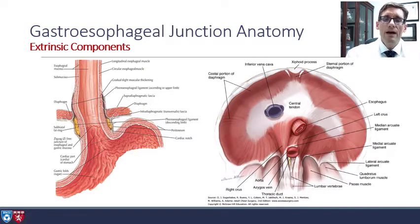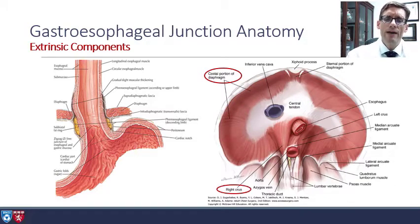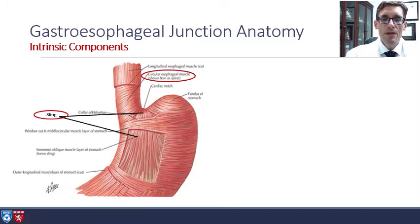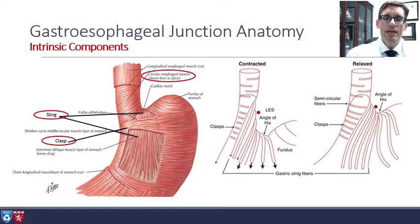Here we have the extrinsic components of the gastroesophageal junction, and these are very important. We have the costal portions of the diaphragm, which do provide some support, and we also have the important crural elements, such as the right crus of the diaphragm, which forms a sling around that intra-abdominal esophagus and is a very important part of the antireflux barrier. There are also important intrinsic components beyond just the circular muscles — the clasp and sling fibers of the gastric cardia play a very important role in that antireflux barrier. The sling fibers pull down, helping to accentuate the angle, and the clasp fibers close it off horizontally.